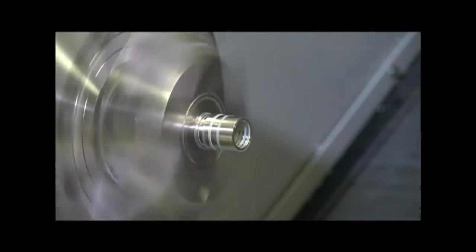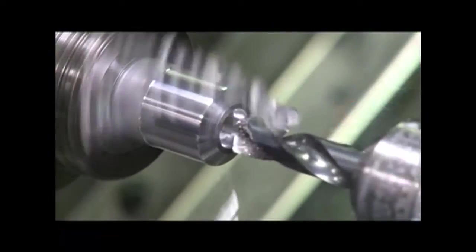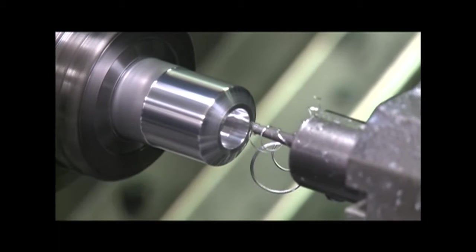Some of the CNC lathes here at KAF have sub-spindles, allowing work to be transferred to a rear spindle for further processing. Some of these multi-tasking lathes have milling capabilities with live tools that work on both spindles.